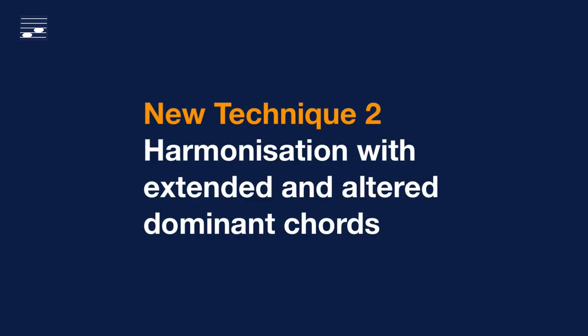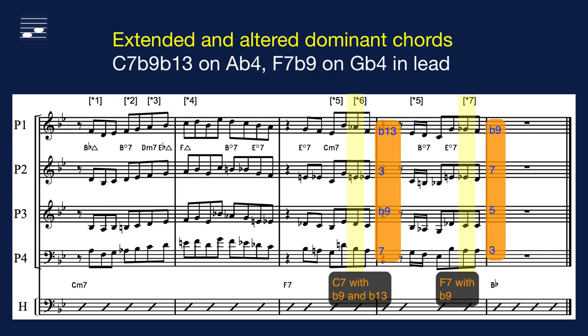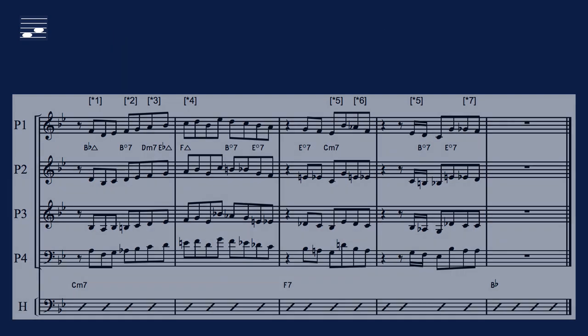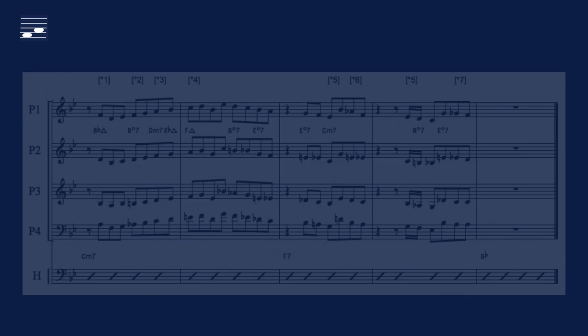Now it's time to introduce the new technique: the harmonization with extended and altered dominant chords. In this example we will use these to harmonize the two non-diatonic pitches. The Ab in the lead in measure 3 is harmonized with the intermediate C7 with b9 and b13. The lowered 6th degree Gb in measure 4 is harmonized with the dominant chord F7b9. This yields the following closed-voicing four-part sectional harmony setting.